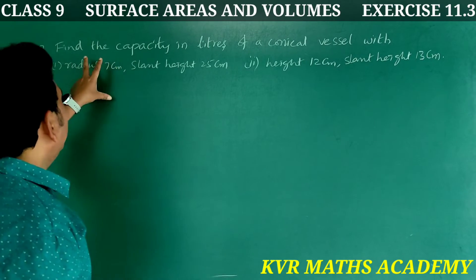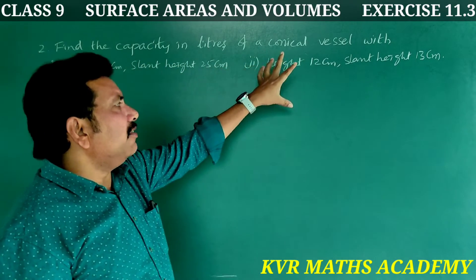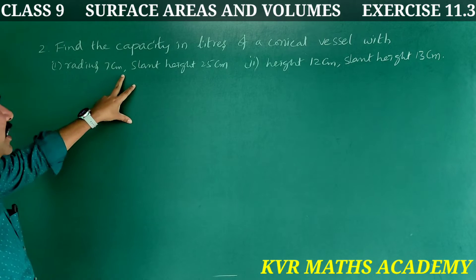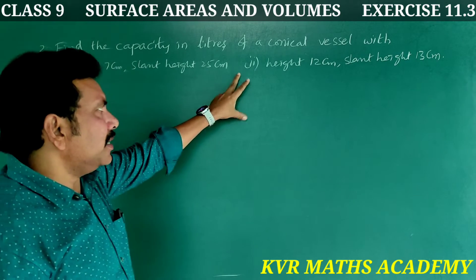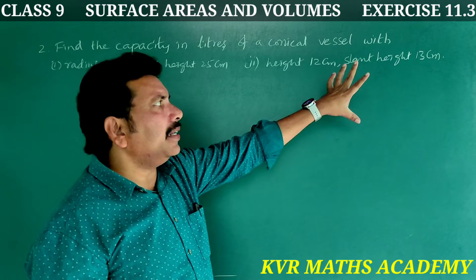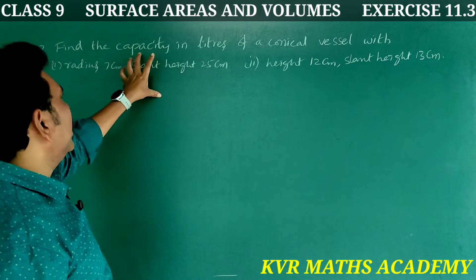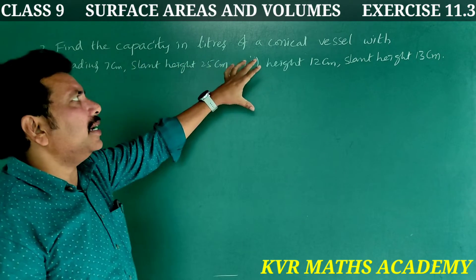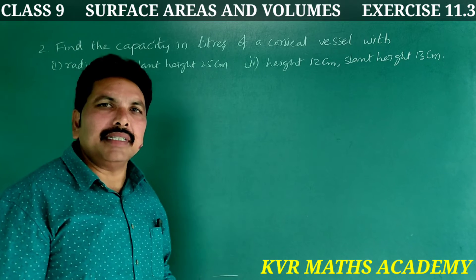Second problem: Find the capacity in liters of conical vessels — first with radius 7 cm and slant height 25 cm, and second with height 12 cm and slant height 13 cm.